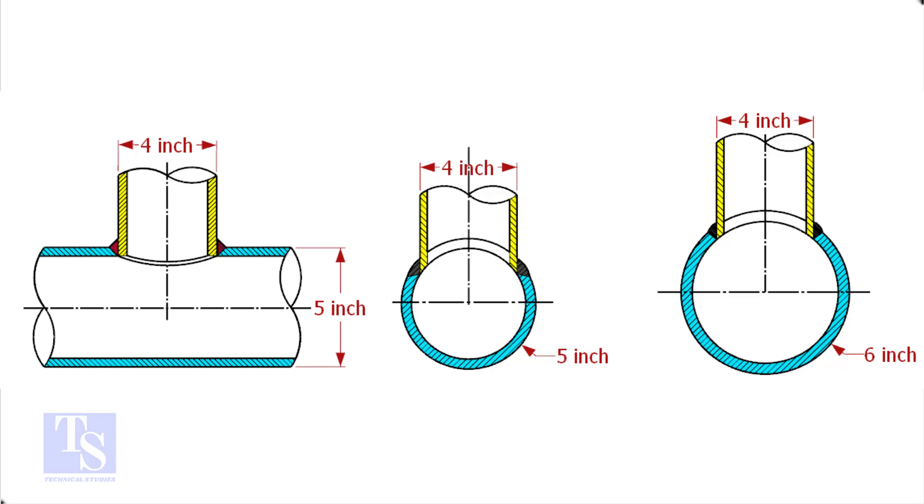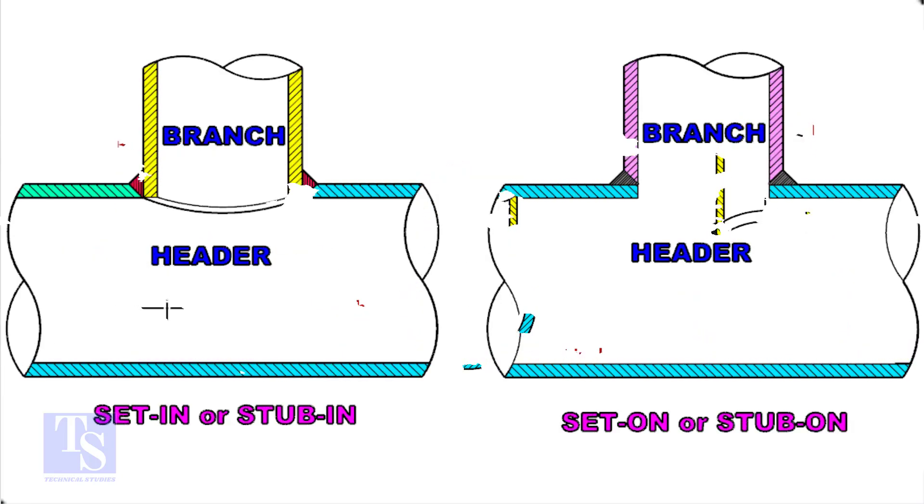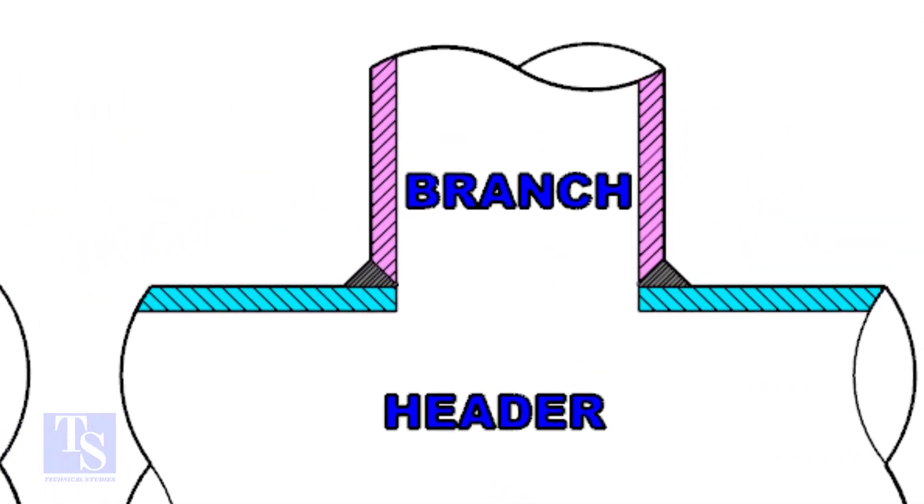Watch the section side view carefully. Check the stub-on view. The branch pipe sits on the header.